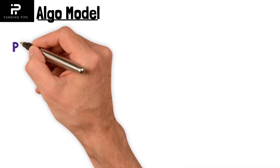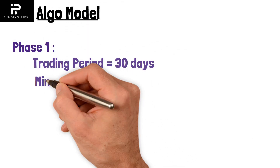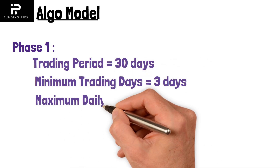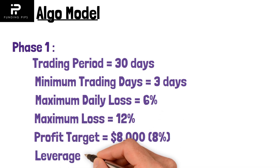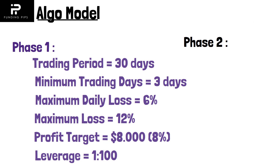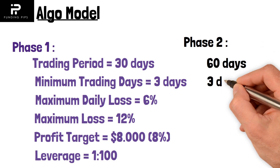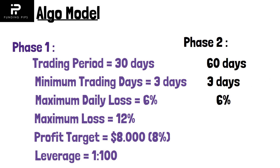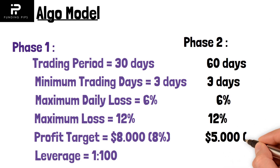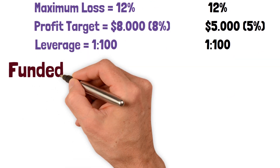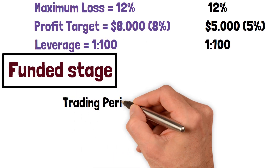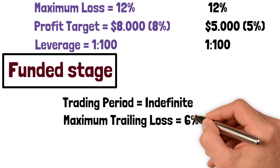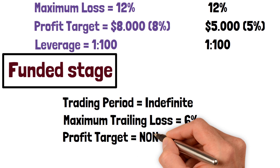Now let's look at the Algo model. Everything is the same here: trading period is 30 days, minimum trading days is 3 days, maximum daily loss is 6%, maximum loss is 12%, and profit target in Phase 1 is 8%. If you pass Phase 1, you move to Phase 2 where trading period is 60 days, minimum trading days is 3, maximum daily loss is 6%, maximum loss is 12%, profit target is 5%, and leverage is 1:200. If you pass both phases, you move to the funded Master account with an indefinite trading period, a trailing loss of 6%, no profit target, and leverage of 1:200.